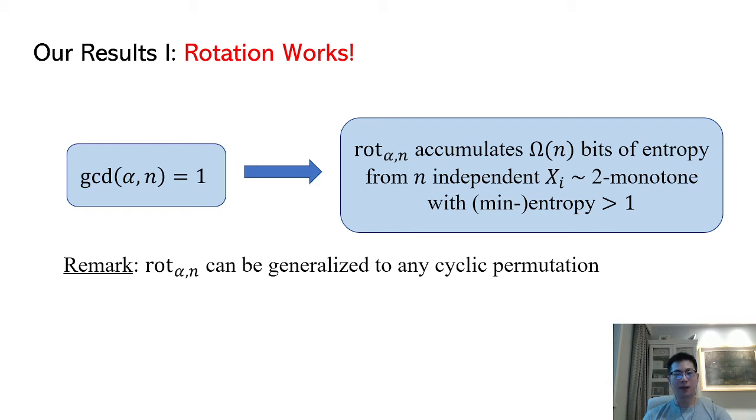Although we typically think of rotation by one as the worst condenser, our result implies rotation by one can also condense two-monotone distributions to linear entropy within n steps. What's more, this result can immediately generalize to cyclic permutations, so that any cyclic permutation can condense to linear entropy within n steps.